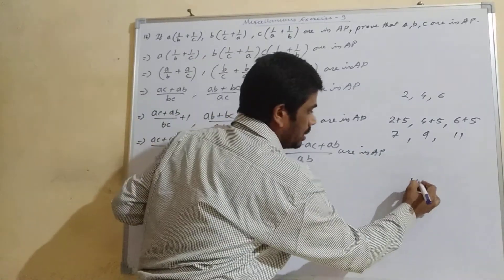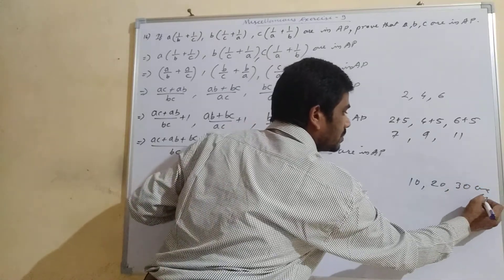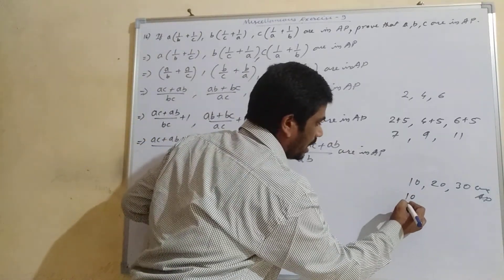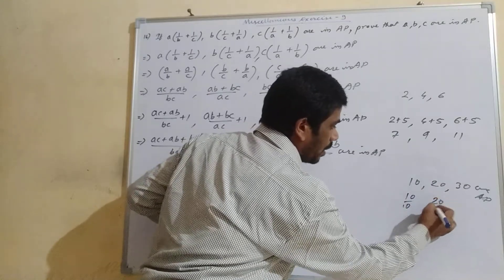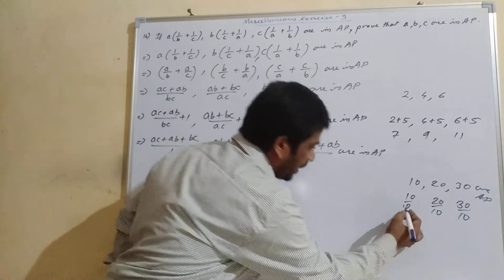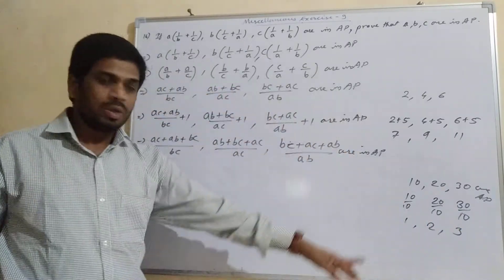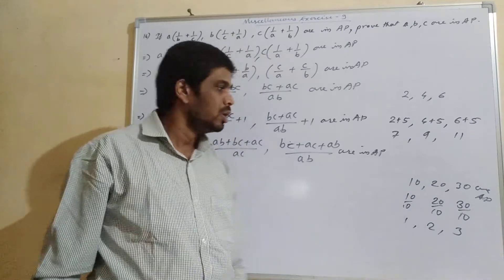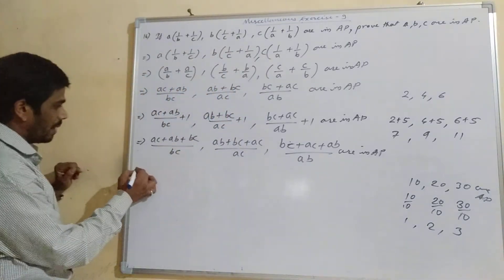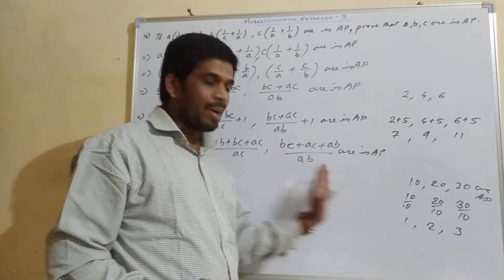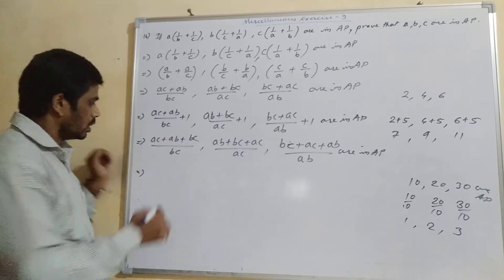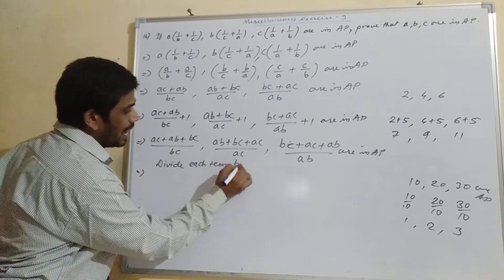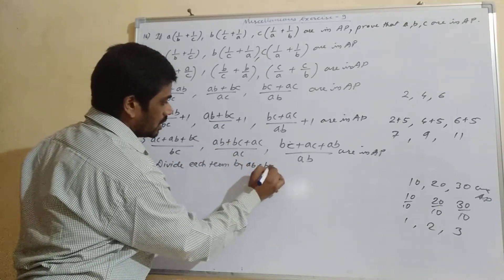Now suppose 10, 20, and 30 are in AP. If you divide each term by the same number — say by 10 — you get 10/10, 20/10, and 30/10, which gives 1, 2, and 3. These are also in AP with equal common differences. This means we can divide by the same number and the sequence stays in AP. So here we divide each term by AB + BC + AC.